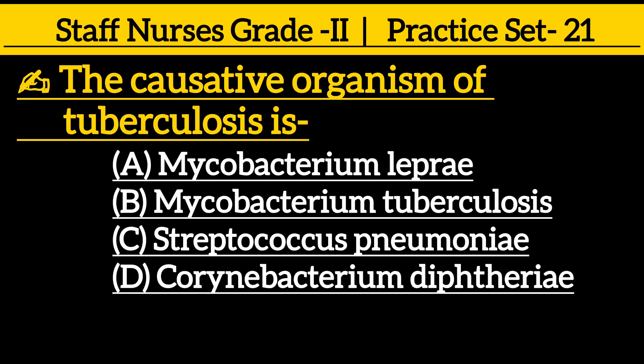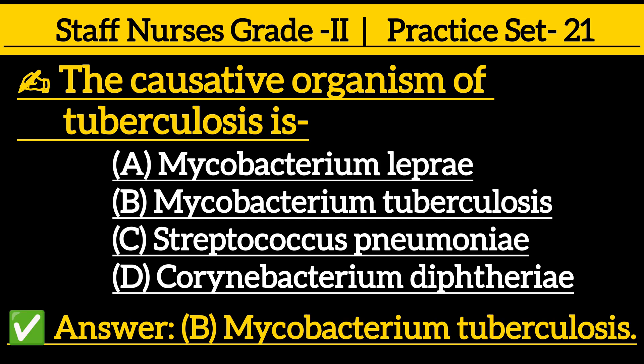The causative organism of tuberculosis is: Option A, Mycobacterium leprae; Option B, Mycobacterium tuberculosis; Option C, Streptococcus pneumoniae; Option D, Corynebacterium diphtheriae. Correct answer is Option B, Mycobacterium tuberculosis.